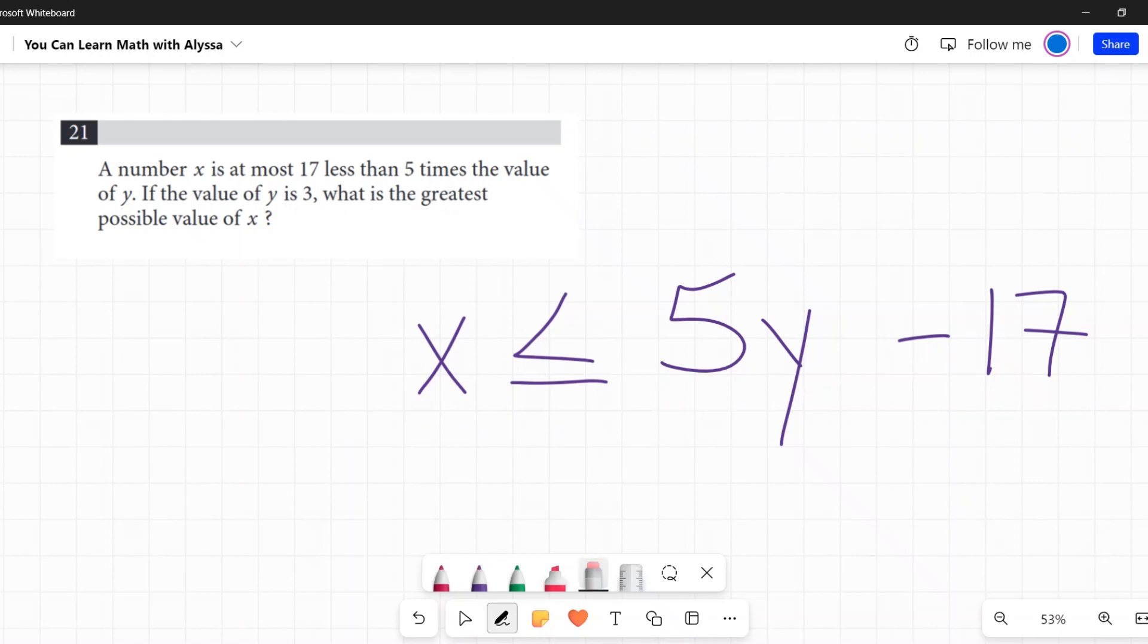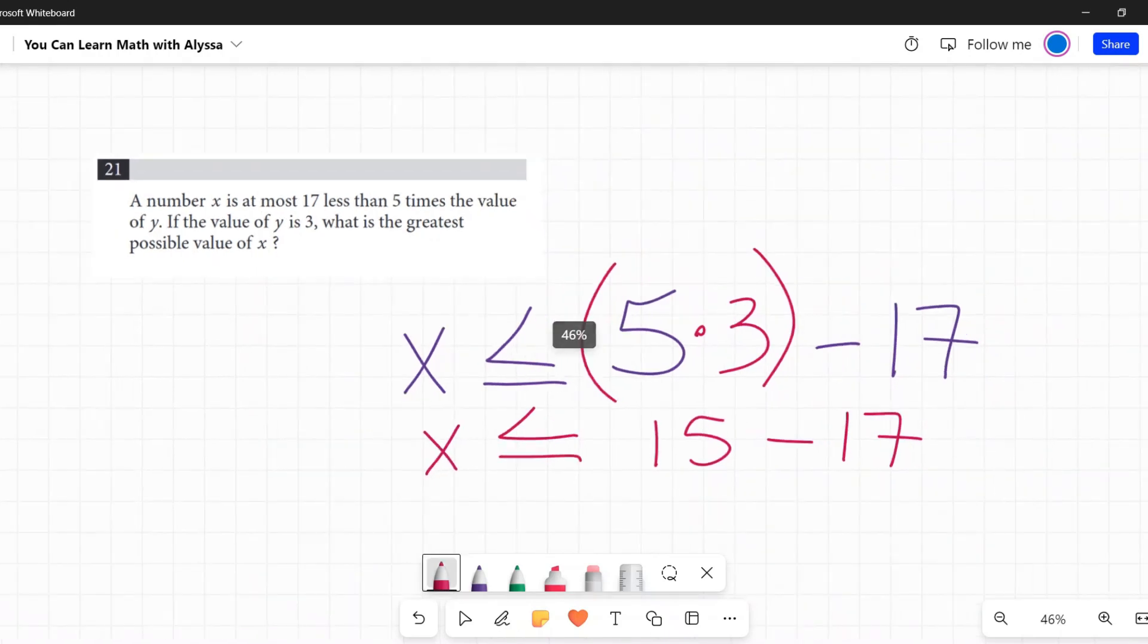If the value of Y is three, plug that in there for Y. What is the greatest possible value of X? Well, five times three is 15. So I know X is less than or equal to 15 minus 17.